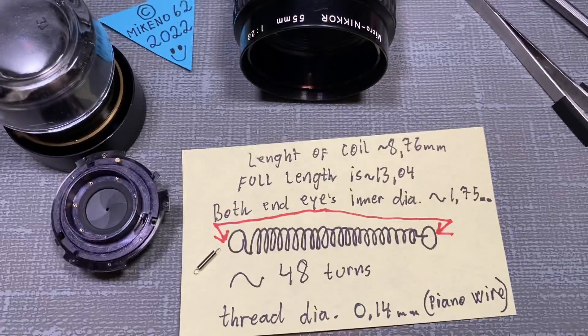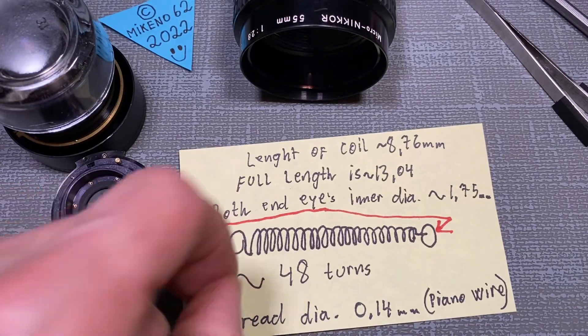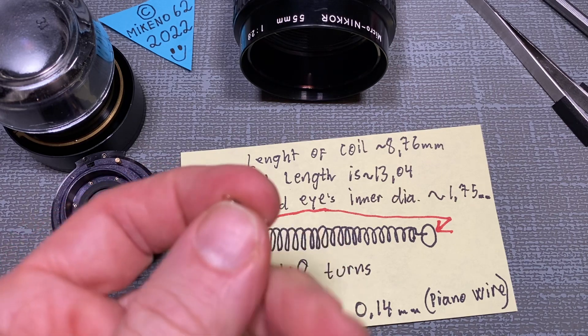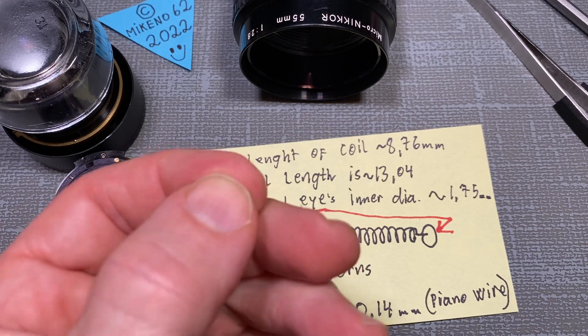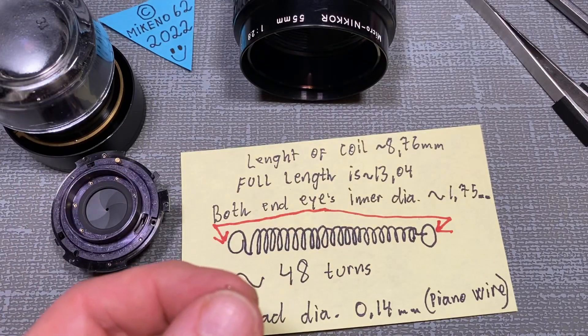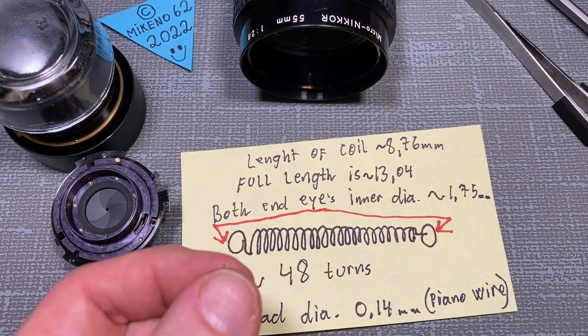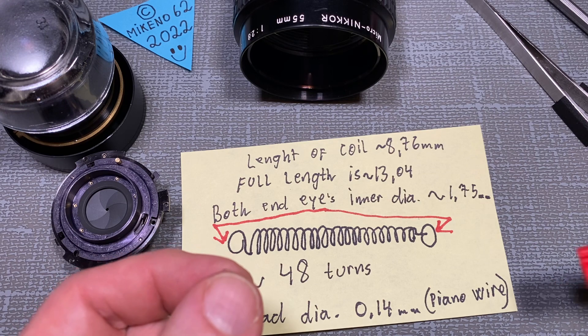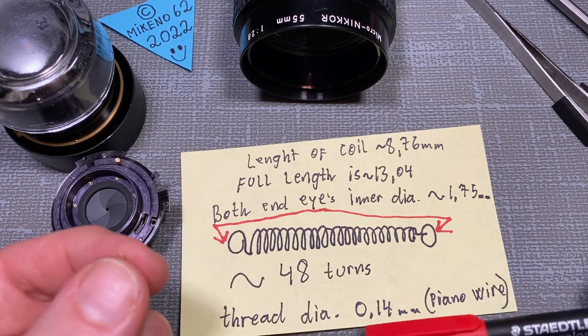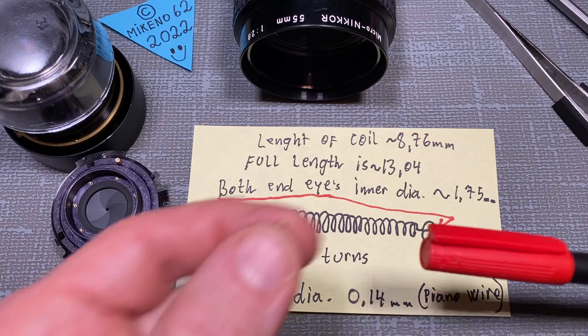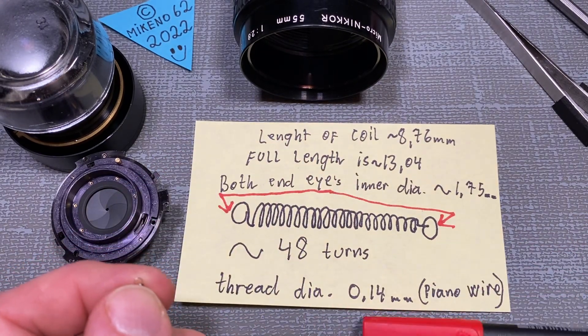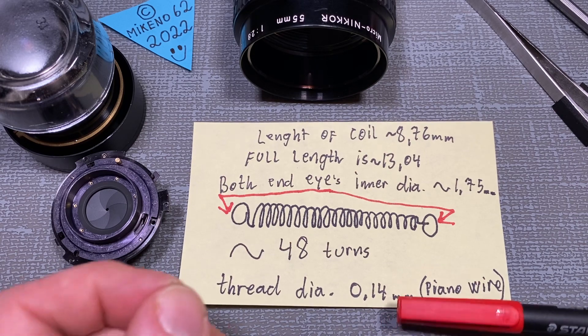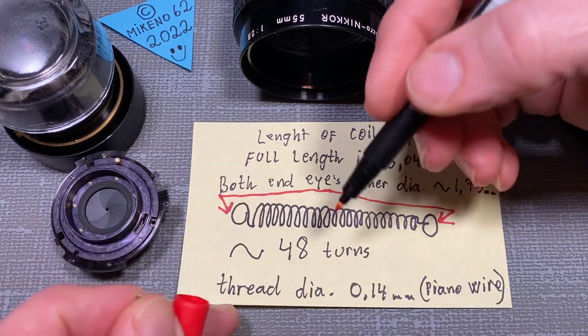I took my lens apart, it's quite easy to just go into it and measure the dimensions. First thing first is the dimension of the actual material it's made of, it's 0.14 millimeter.